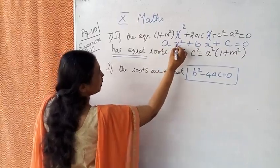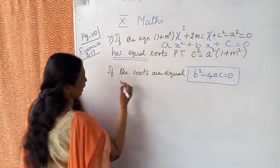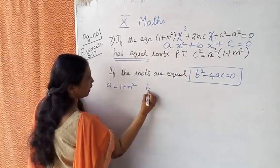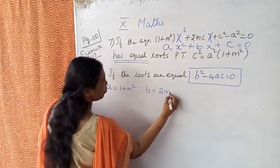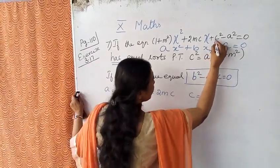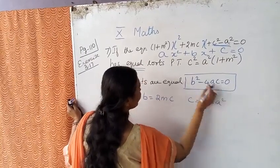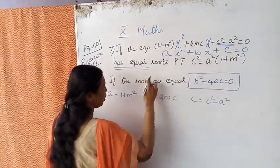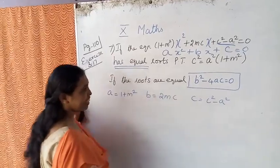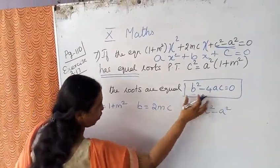We'll compare. A corresponds to 1 plus m square. B corresponds to 2mc. C constant corresponds to c square minus a square.